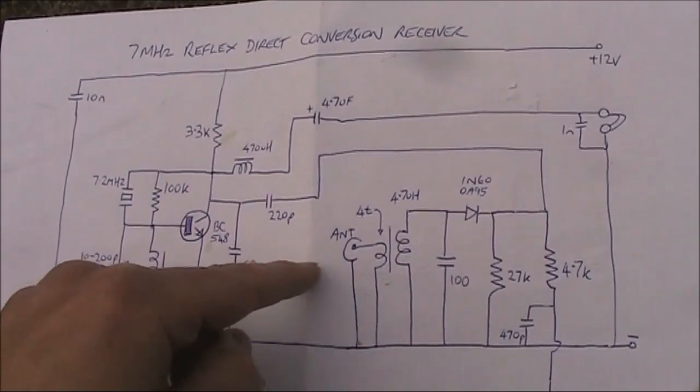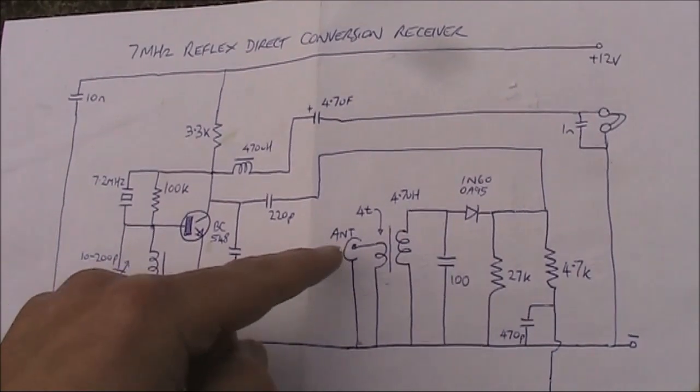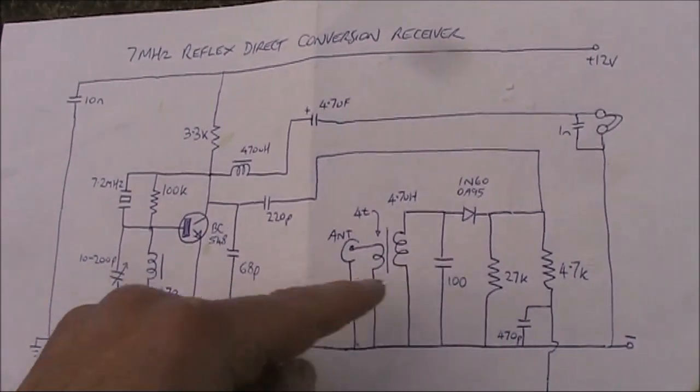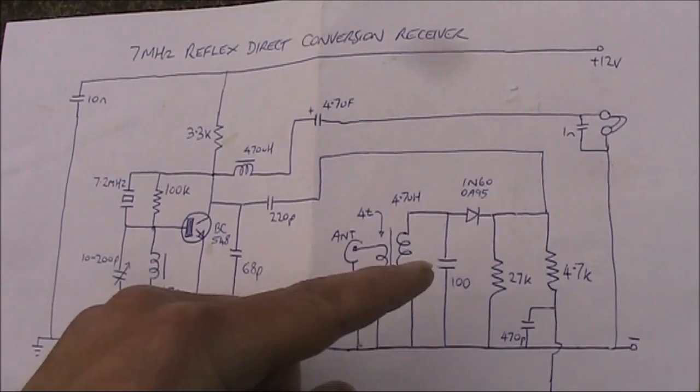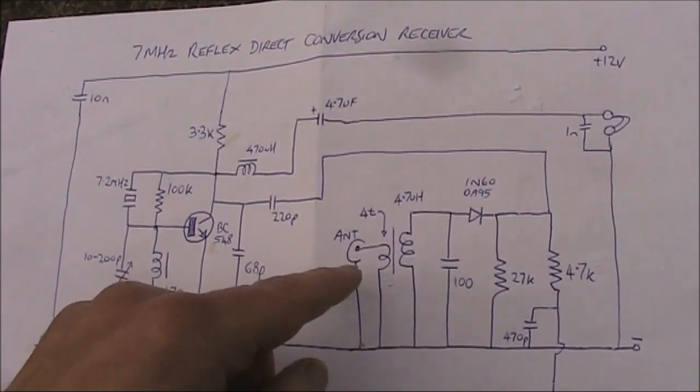That could be an amplifier that amplifies RF between the antenna and the detector, and provides a bit of extra gain, as well as amplifying audio.